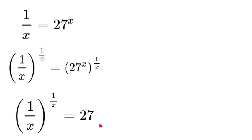And then the next thing we're going to do is we're going to rewrite 27 with a base of 3, and 3 to the power of 3 is equal to 27. So we'll have 1 over x to the power of 1 over x is equal to 3 to the power of 3.